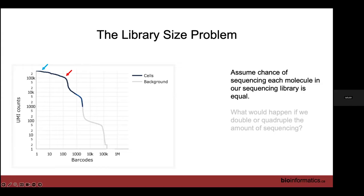If we compare a blue cell to a red cell and the blue cell has more than twice as many UMIs, then for any particular gene the blue cell will have twice as many UMIs as the red cell — and we don't care about that. We don't want to know that a cluster has twice as much expression simply because we sequenced it more. That's not interesting.